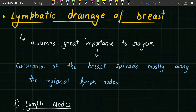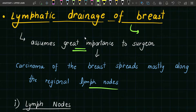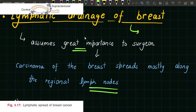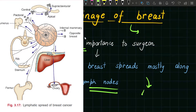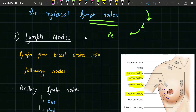Let's get started with today's topic: lymphatic drainage of breast. This topic is important because if someone has breast cancer, there are chances that the tumor cells can spread through the lymphatic vessels to other areas of the body. In the case of breast cancer, it can spread to the liver, and from there it can reach up to the pelvic region. We are going to study two topics: lymph nodes and lymphatic vessels.